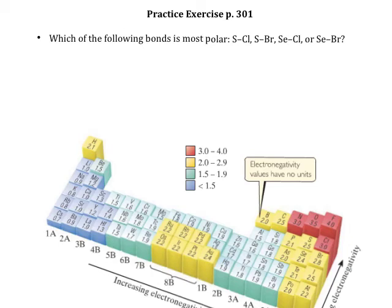So the practice exercise from page 301 in the textbook, we're looking at determining the polarity of individual bonds. They're giving us four different bonds: a bond between sulfur and chlorine, a bond between sulfur and bromine, a bond between selenium and chlorine, and between selenium and bromine.